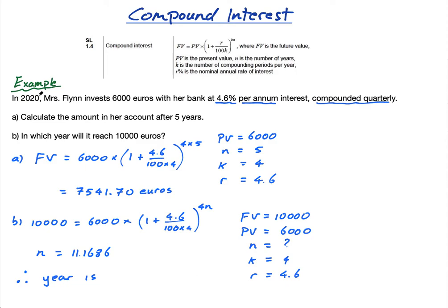When n is 1, that is the end of 2020. When n is 2, that's the end of 2021. When n is 3, that's the end of 2022. So when n is 11, that's the end of 2030. But it hasn't quite reached 10,000 when n is 11. It needs 11.16, so it needs a bit of the next year, so the year is going to be 2031.